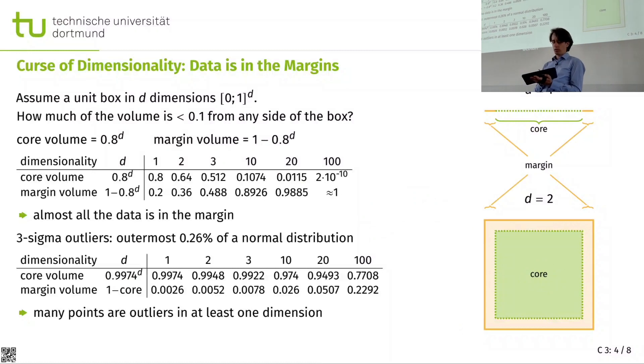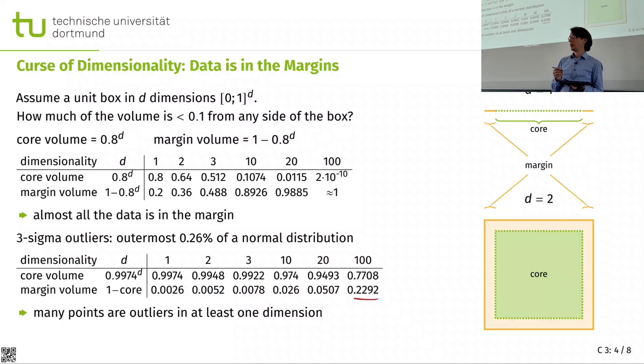And if I go to 100 dimensions, I almost have one-fourth of data points that is a three sigma outlier in at least one of the attributes. So these effects kind of sum up. And that is still low dimensional for what we're looking at.